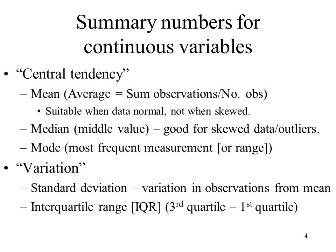The median is the middle value, or the average of the two middle values if you have an even number of observations. Because the median is just the middle value, this is good for skewed data or outliers. The mode is the most frequent measurement or range of measurements, but it's not used as much as the mean or the median.